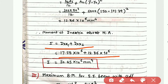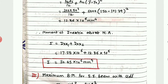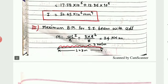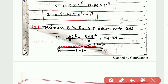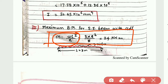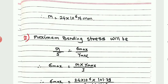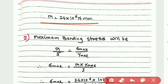The total moment of inertia about the neutral axis is I = Ixx1 + Ixx2 — add both values. Now using the given data: simply supported beam, span L = 8 m, UDL w = 3 kN/m. The maximum bending moment formula for a simply supported beam with UDL is M = wL²/8. This gives M = 24 kN·m.